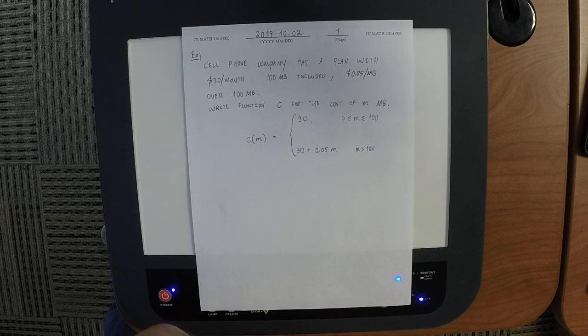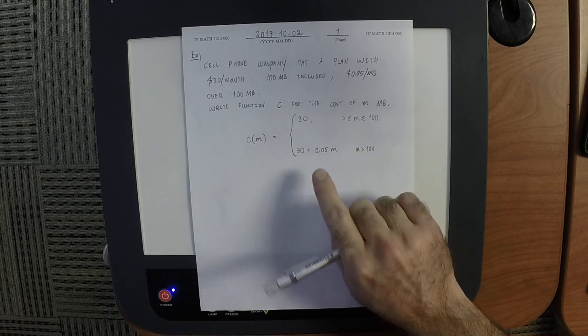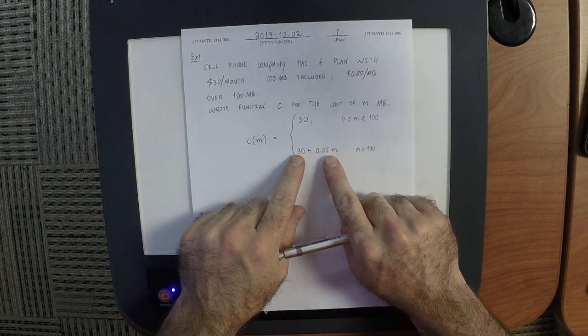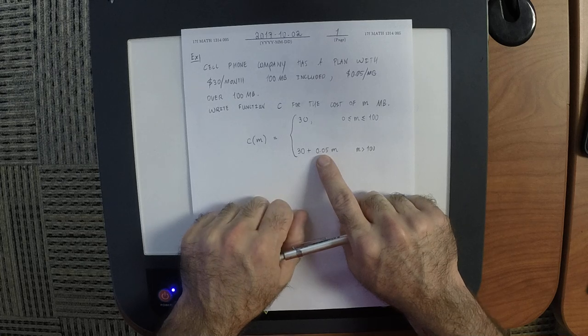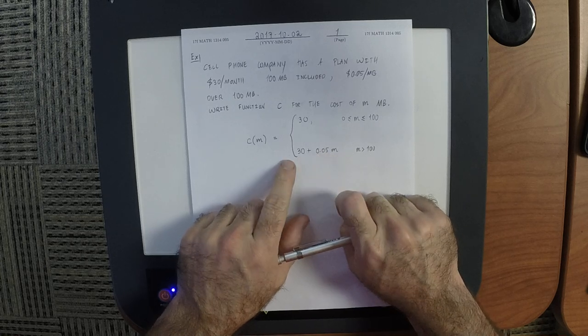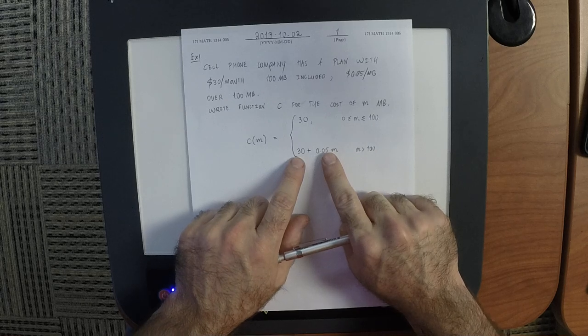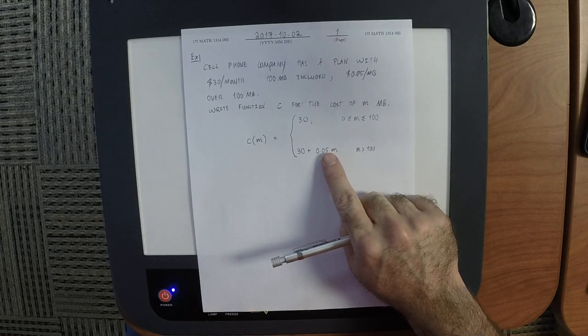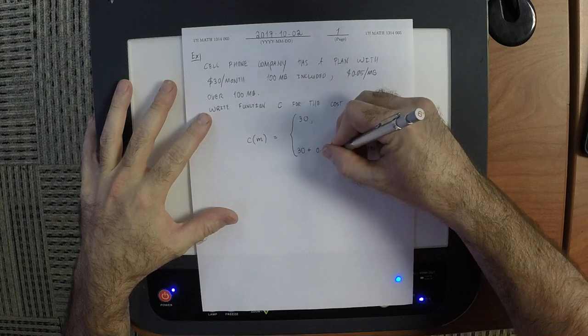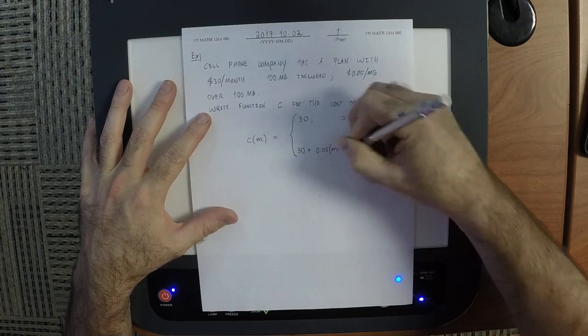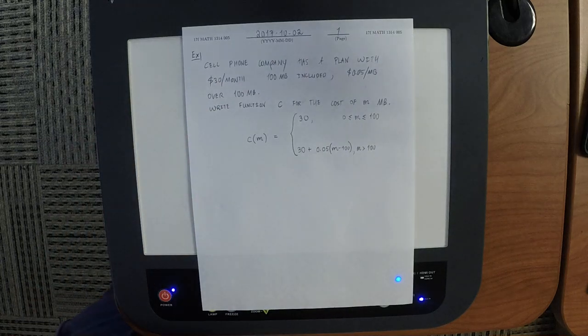Yeah, minus 100. Right, so if we plugged in 101 into this formula right here, then that'd be 101 nickels, plus $30. Is it supposed to be 101 nickels? No, it's supposed to be just one of them, right? So the one that we went over, it's really M minus 100. Okay, and that does it.